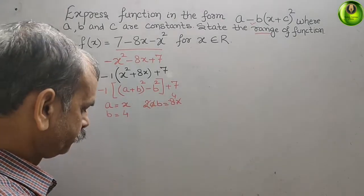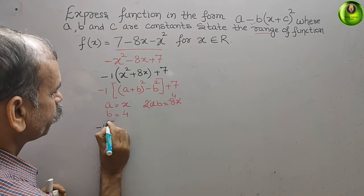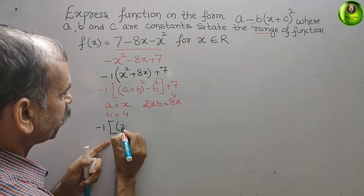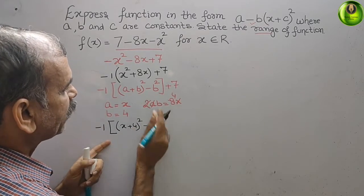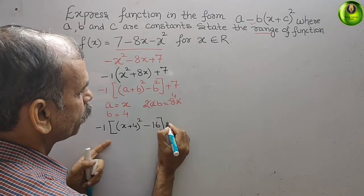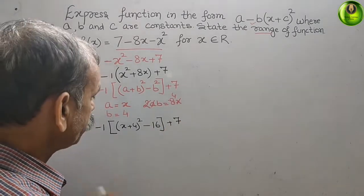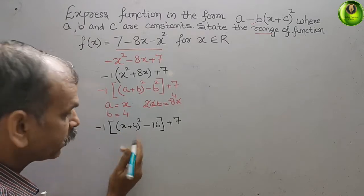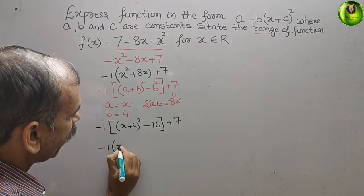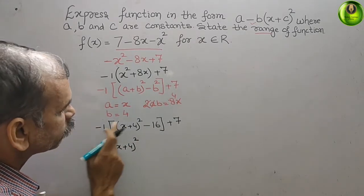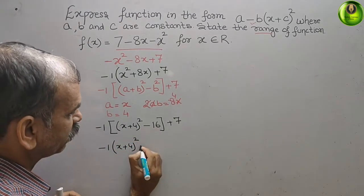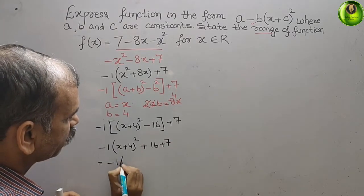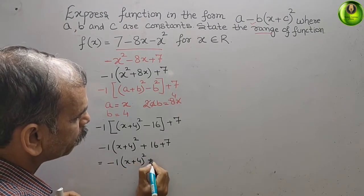Substituting this value, we get minus 1 times (x plus 4) whole square minus b squared, that is 16, plus 7. Opening the bracket: minus 1 times (x plus 4) whole square, then minus 1 times minus 16 gives plus 16, plus 7.